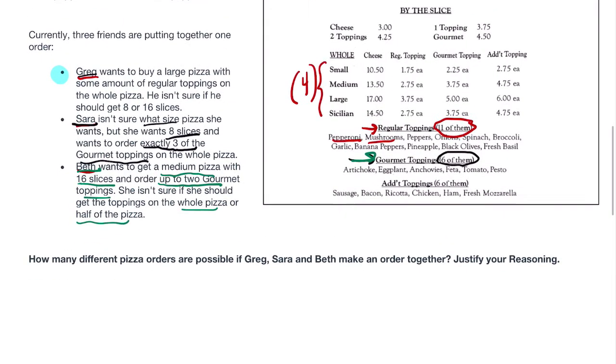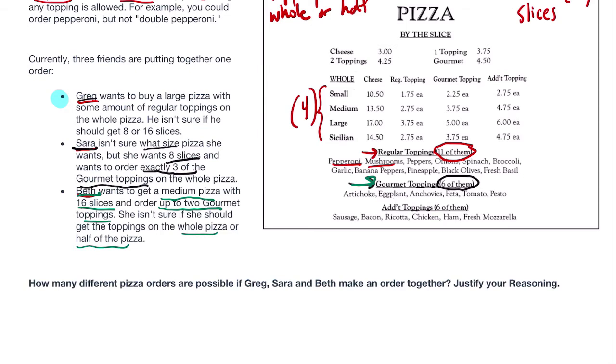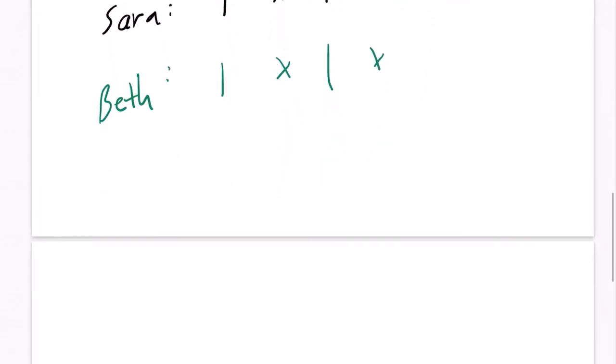So what does that mean? She can get zero gourmet toppings. So I'm going to list that out right here. So when she's looking at six toppings, she can get none of them. Six choose zero. Or she can look at the six toppings and say, I want just one of them. Or she's looking at all six toppings and say, I want two of them. So she can make any of these choices. And she isn't sure if she should get them on the whole pizza or half the pizza. Now, I've seen students solve this, and there's just so many ways to interpret this. Let me show you what I think this means.